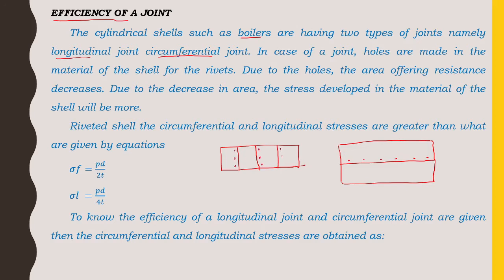These are called riveted joints on the shell. Due to the holes provided, the area offering resistance decreases. Some holes will be there and this deduction part will reduce the area, so the stress developed in the material of the shell will be more.